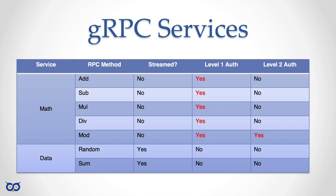Everything we're going to do for non-streaming RPCs we can also do for streaming ones — we just have to write the appropriate code. We're going to see it's called an interceptor. Unary calls are where you make a single call to the server and that's it. Streaming calls are different — data is repeatedly sent and consumed. Securing streaming is slightly different but not much. We'll only cover unary here.